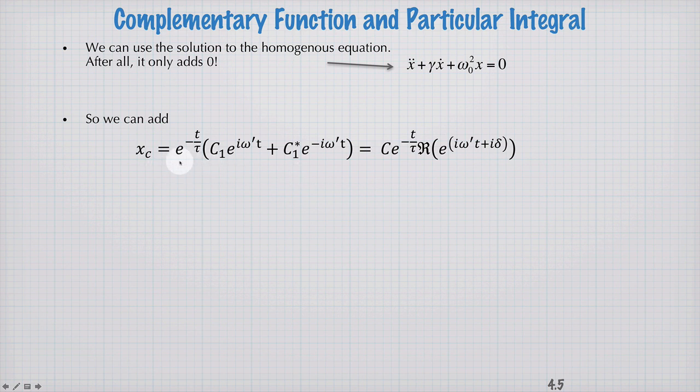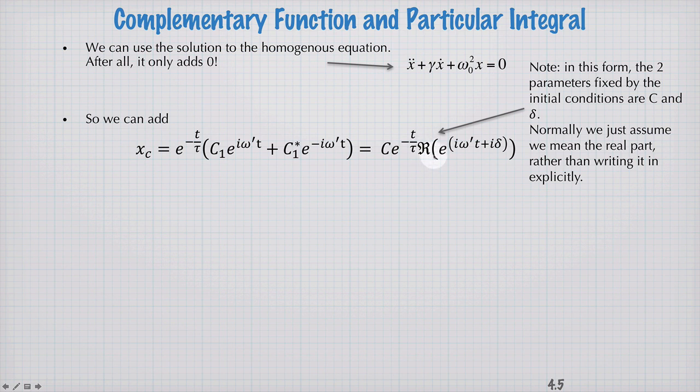Because remember, we had this solution to the homogeneous equation. For the underdamped case, there was a decaying exponential with time constant tau multiplied by these oscillating exponentials. The two free parameters for fitting the initial position and velocity are embedded in c1 and c1 star. I could equally write this as some number c, which is now a real number, with the decaying exponential and the real part of this oscillatory exponential and a phase shift delta. Normally, we don't bother writing the function for the real part here.